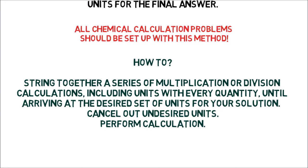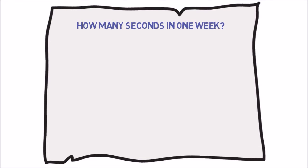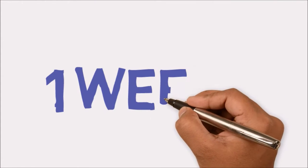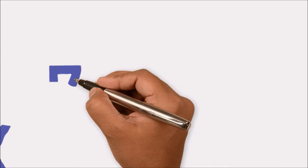For example, we can easily determine the number of seconds in a week using unit analysis. In this question, start with the known quantity, one week, then multiply by known conversion factors. For example, there are seven days in one week. Write the conversion factor as fractions.